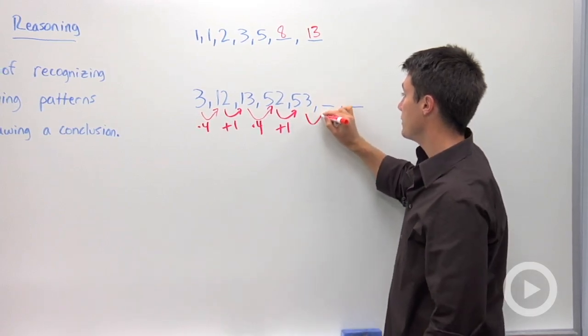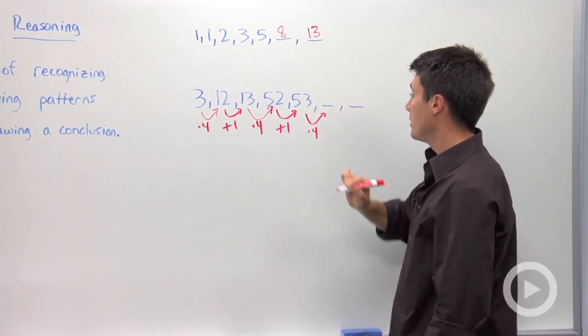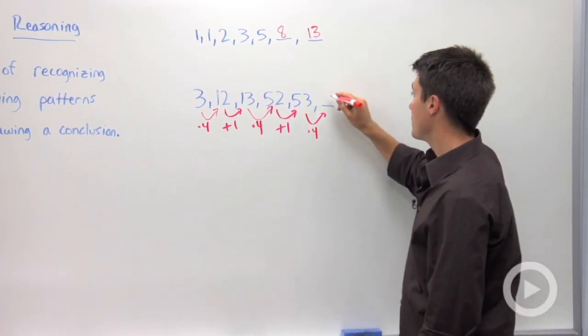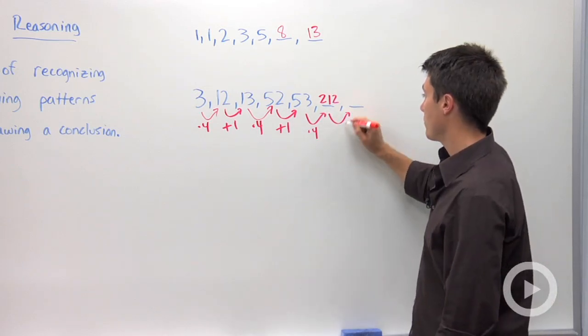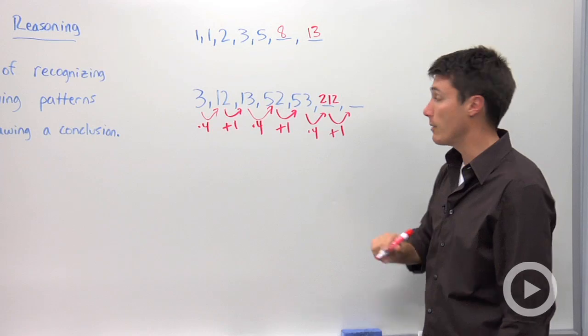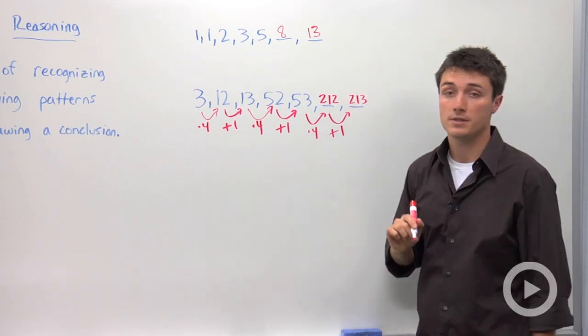So to find my remaining numbers, I need to multiply fifty-three by four. So that's going to be two hundred and twelve. And then to find my remaining missing number, I'm going to add one. So this is going to be two hundred and thirteen.